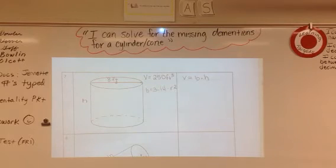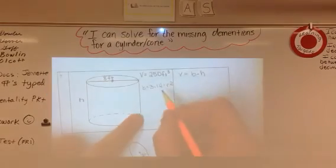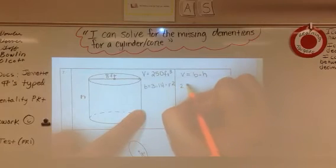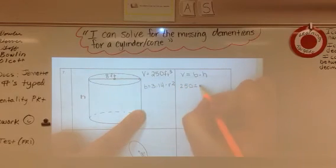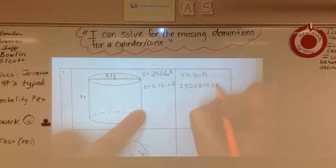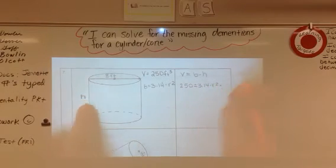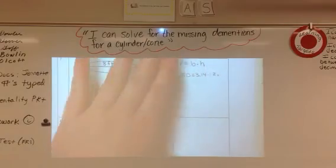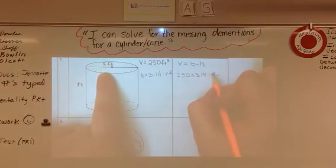Now we're trying to find our height, so it's going to give us the other two. So let's go ahead and start filling in. Again, we know our volume is 250. And that equals 3.14 times r squared times, oops, sorry. I was going off the other one. So we have 8 squared.